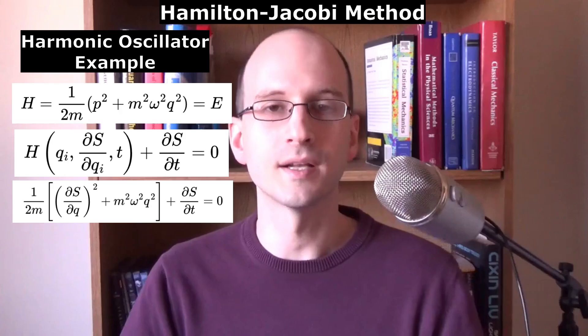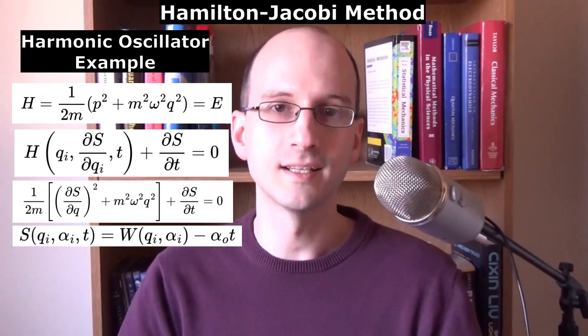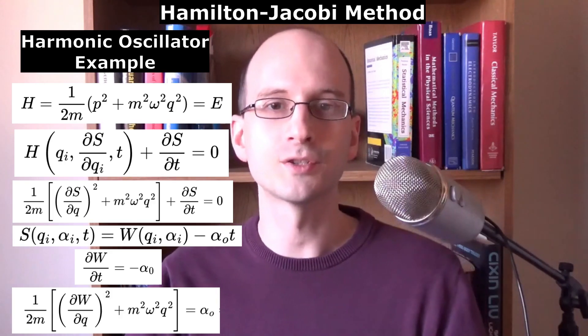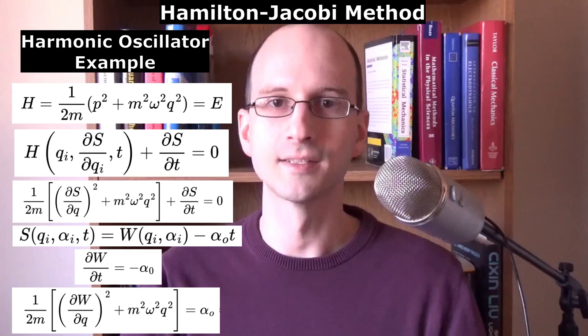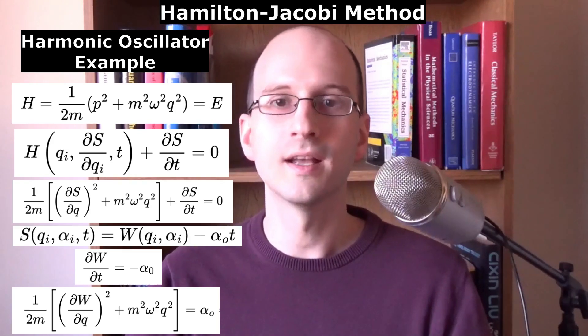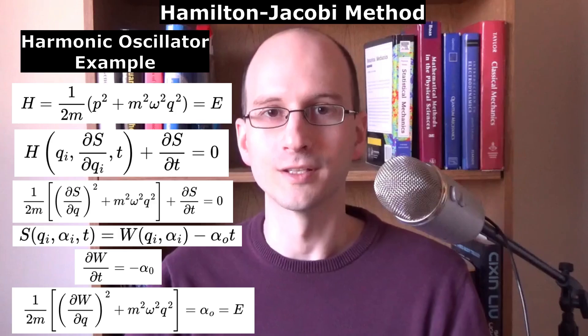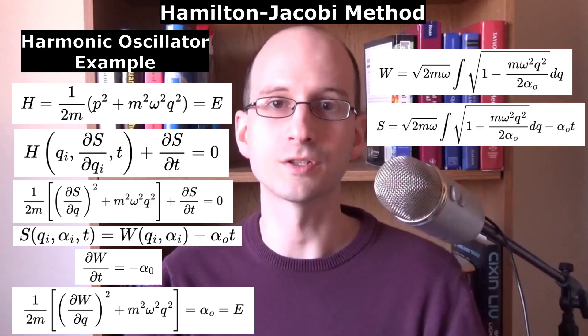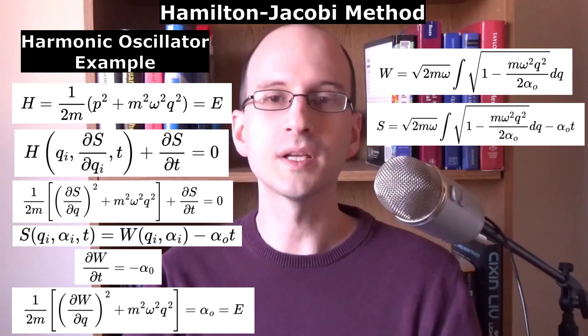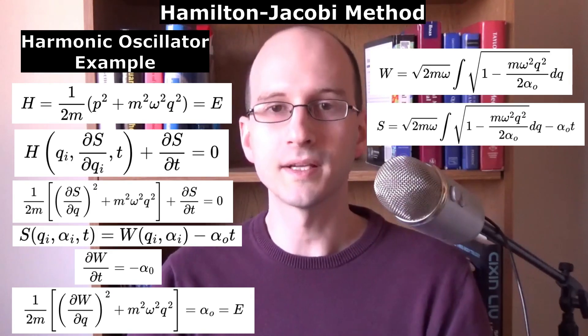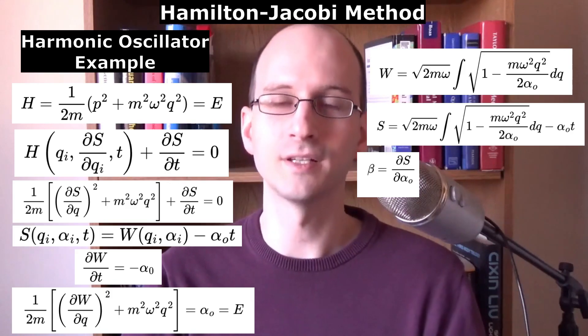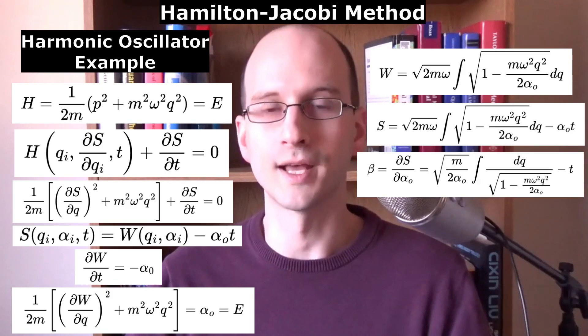We use the Hamilton-Jacobi equation and rewrite the momentum in terms of the action derivative. Since the Hamiltonian doesn't depend explicitly on time, s equals w minus alpha t, and its partial time derivative is minus alpha. This changes the Hamilton-Jacobi equation to look like this. Since the left side is just the Hamiltonian, alpha naught must be the energy. Solving for w, we get this. To get s, we just subtract alpha t. This could be integrated in principle, but because beta equals the derivative of s with respect to alpha, the book thinks it's easier to do that derivative first.